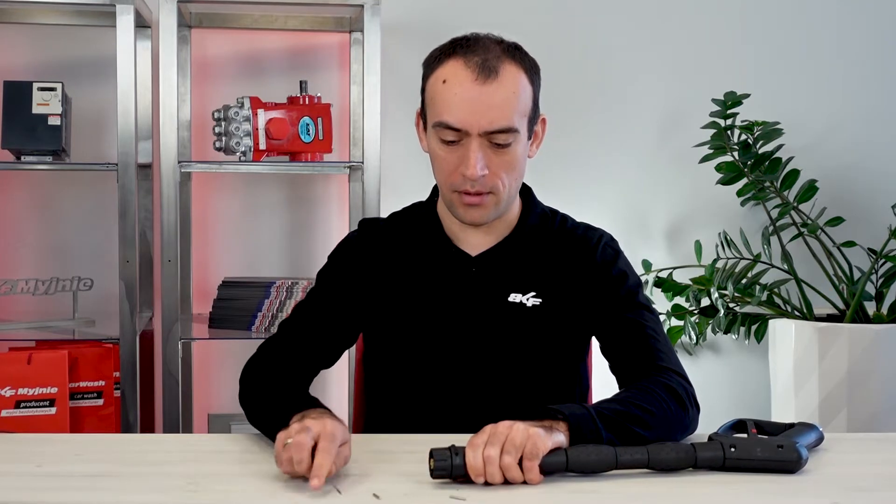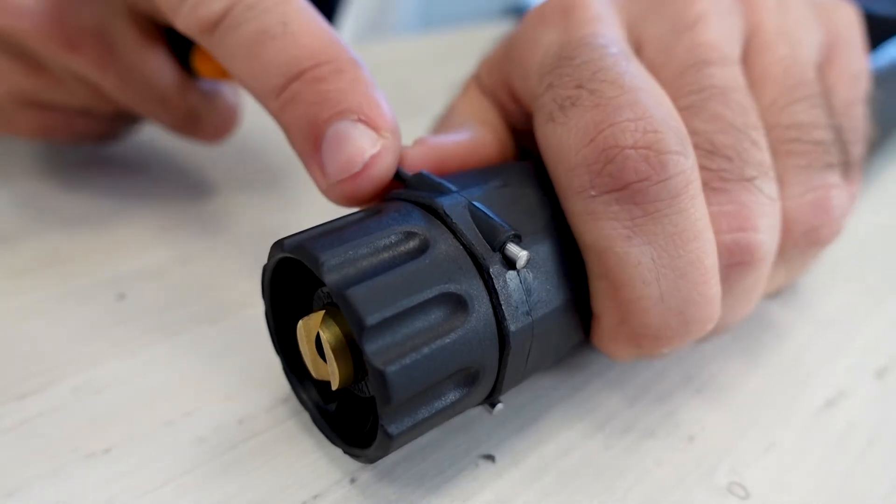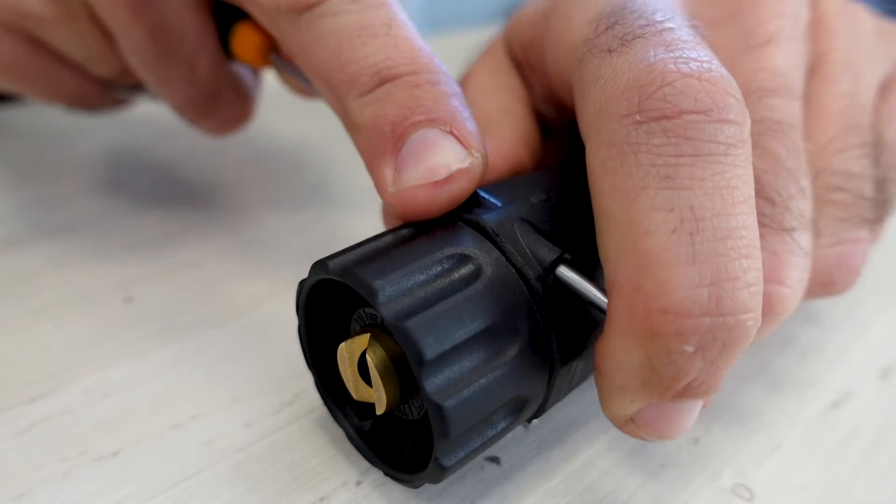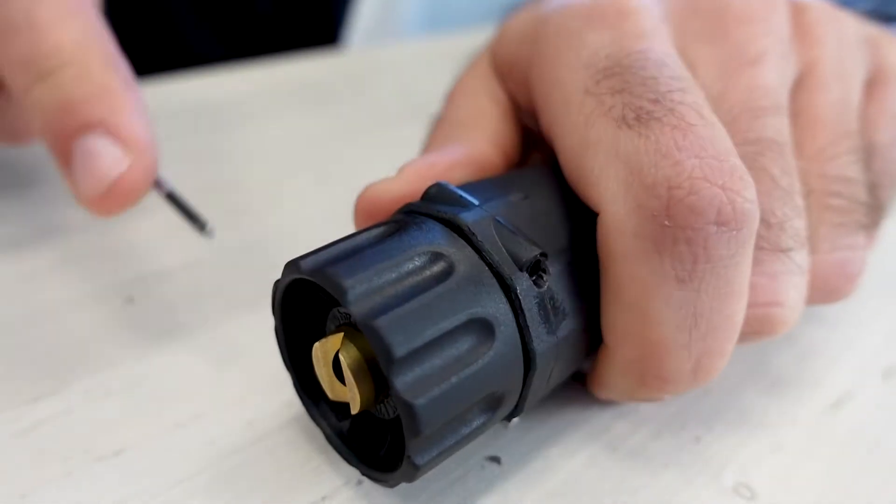Remove the gun tip protection by pushing out two locking elements. To do that, you can use a thin screwdriver smaller than the locking hole.